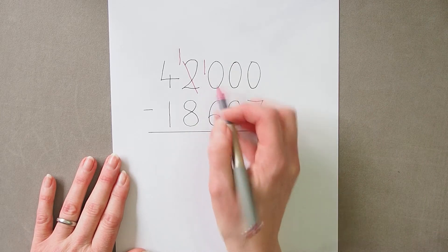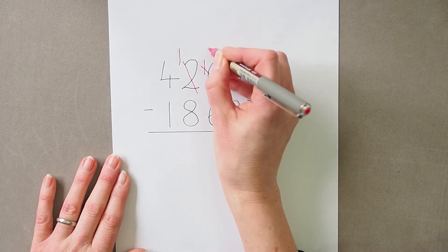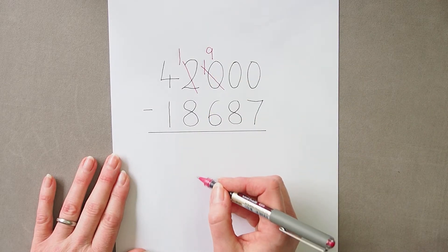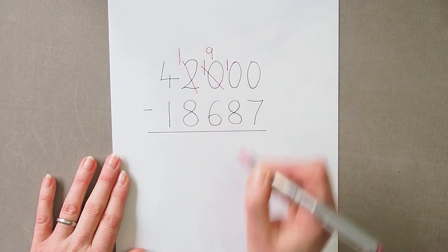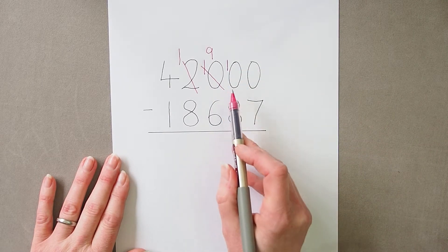Now I can exchange one of these hundreds and I would have nine hundreds left, and again I put that one hundred I've got into my tens column, so now I've got ten tens.